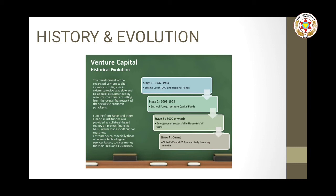The development of the organized venture capital industry in India was slow and circumscribed by resource constraints resulting from the overall framework of socialistic economic paradigms. Funding from banks and other financial institutions was provided as collateral-based money on a project financing basis, which made it difficult for most new entrepreneurs — especially those who were technology and services based — to raise money for their ideas and businesses.